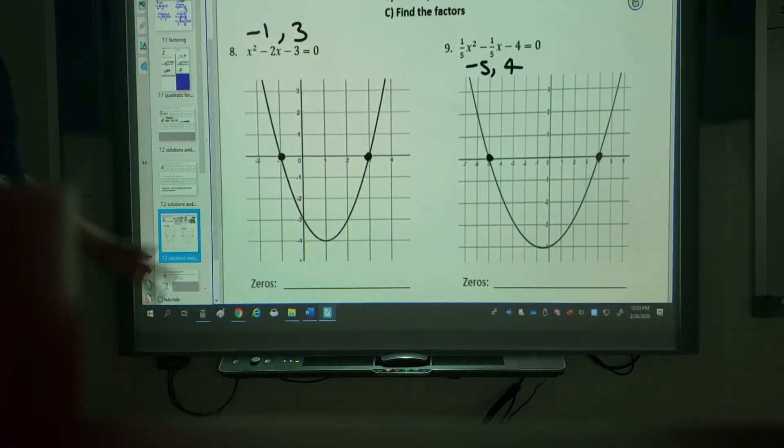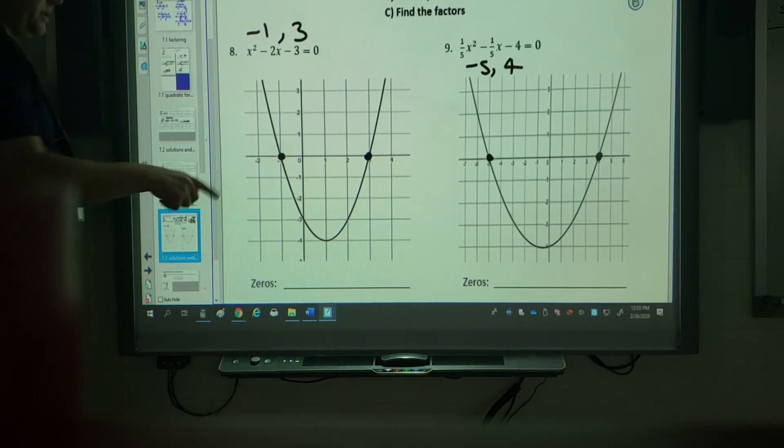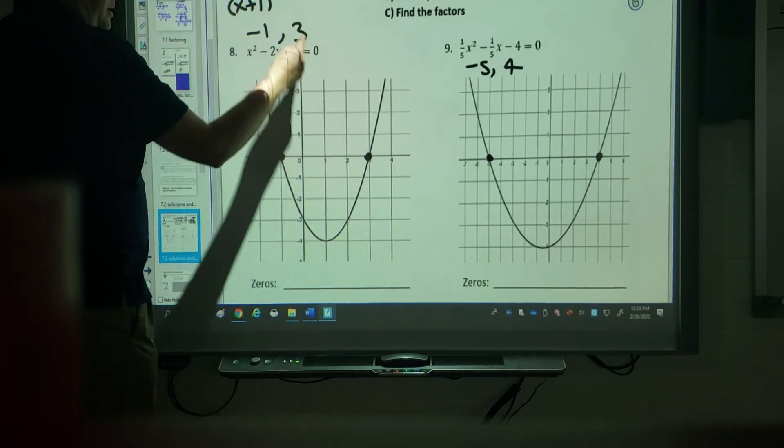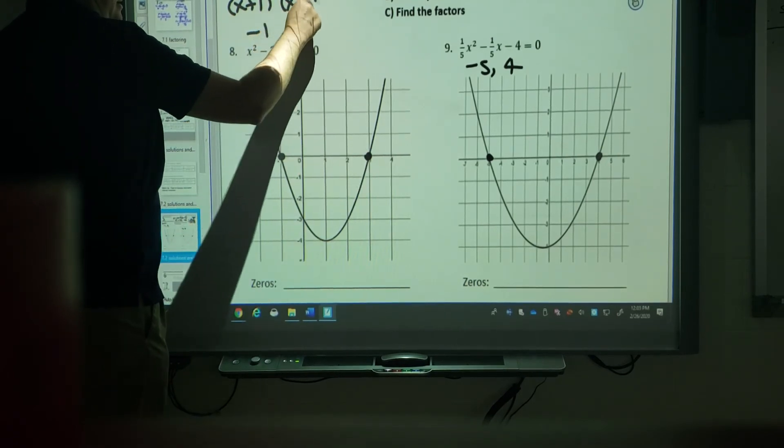Find the factors. So I know the factors is one where I have to do the opposite of what it says down here. So instead of negative 1, positive 1. Instead of positive 3, negative 3.